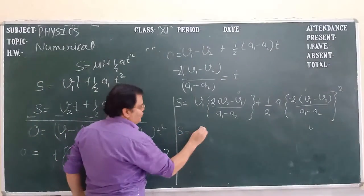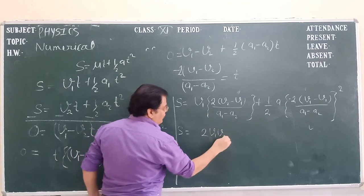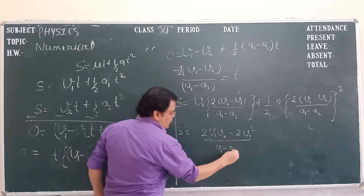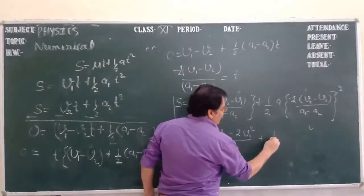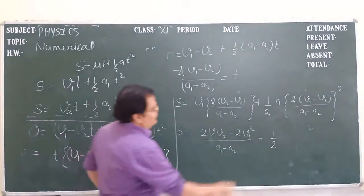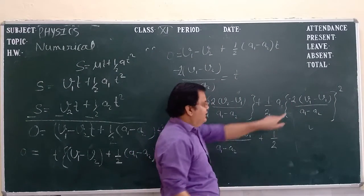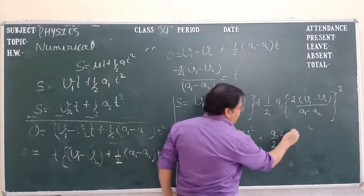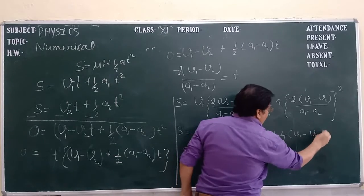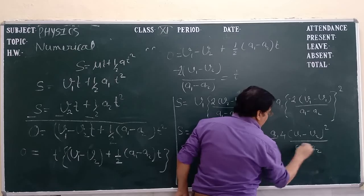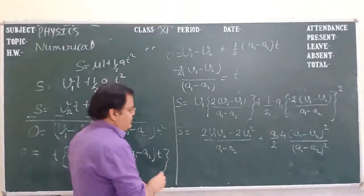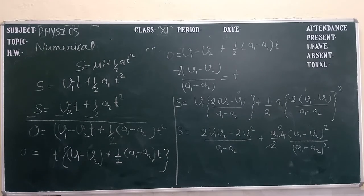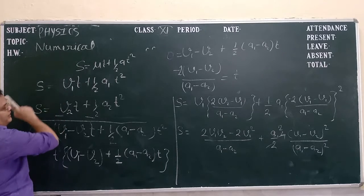Now we are going to simplify the equation. What we get? S equal to 2v1 into v2 minus v1 upon a1 minus a2 plus v2 minus v1 whole square upon a1 minus a2 whole square. Just take common. If you take common then what will be your result?